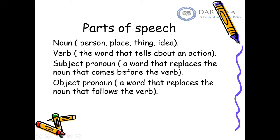The object pronoun is the word that replaces the noun that follows the verb. The noun that follows the verb is the noun that the action is done upon. For example, 'I gave Sarah a gift' — Sarah is receiving my action, so she is the object. When I replace her name with a pronoun, I use an object pronoun: 'I gave her a gift.' Of course it also depends on gender and whether it is singular or plural.